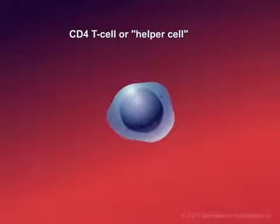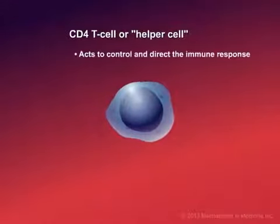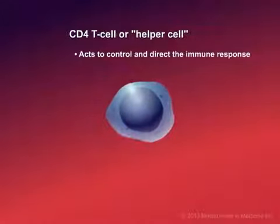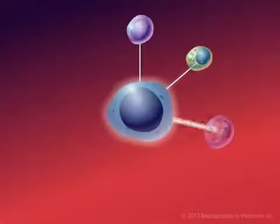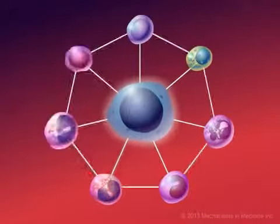A type of white blood cell is the CD4 T cell lymphocyte, or helper cell, which acts to control and direct the immune response. The CD4 cell is an important cell in the immune system because it coordinates all the other immune cells.